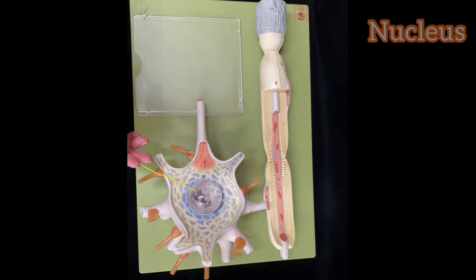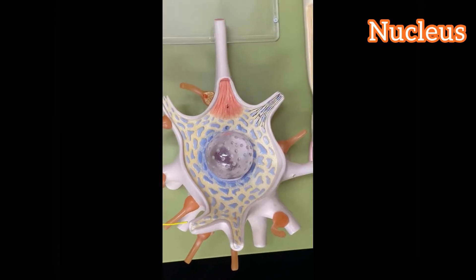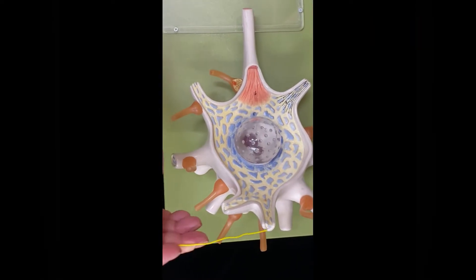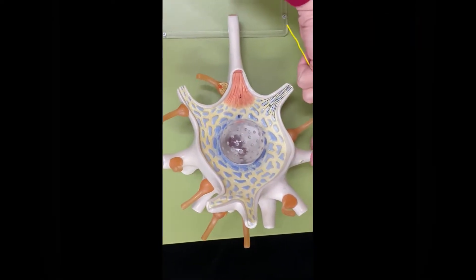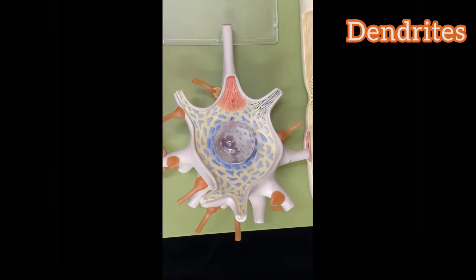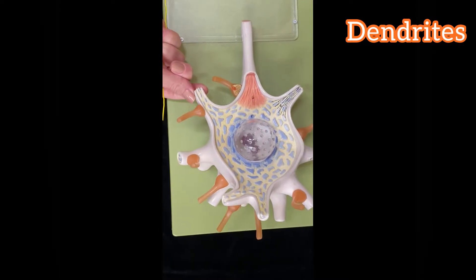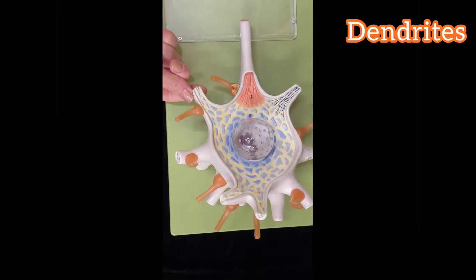Here you have the nucleus. And all these projections that you see here, they are named dendrites. So all these are dendrites.